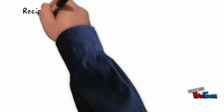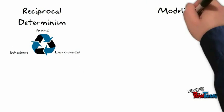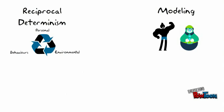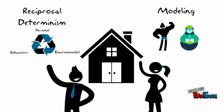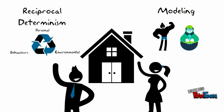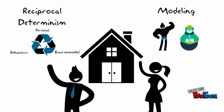Reciprocal Determinism and Modeling can provide teachers with powerful tools for structuring learning environments. By understanding the interrelated factors that affect students, we can respond appropriately in challenging situations. By using modeling, we can reflect on how our own conduct sets the tone for our classrooms.